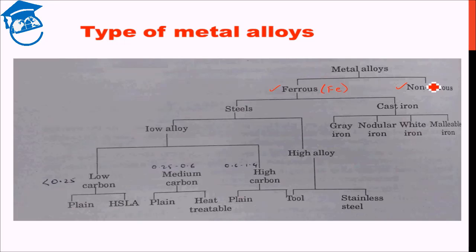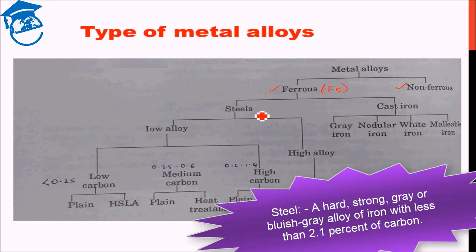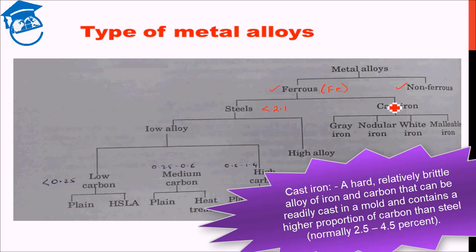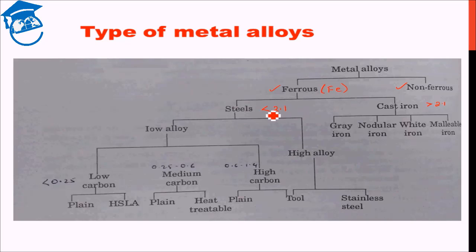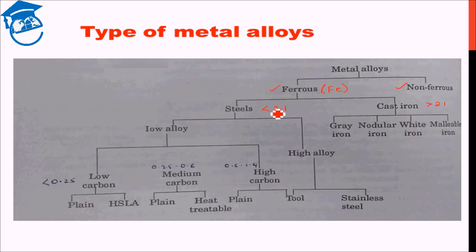The ferrous system can further be divided into steel and cast iron. Steel is basically iron with less than 2.1 weight percent carbon. Cast iron, as you may remember from the phase diagram, has carbon above 2.1% but below 6.67% — normally cast iron ranges between 2.5% to around 4.5%. Note that though steel has up to 2.1% carbon, this is already around 30% of the saturation value of 6.67%.